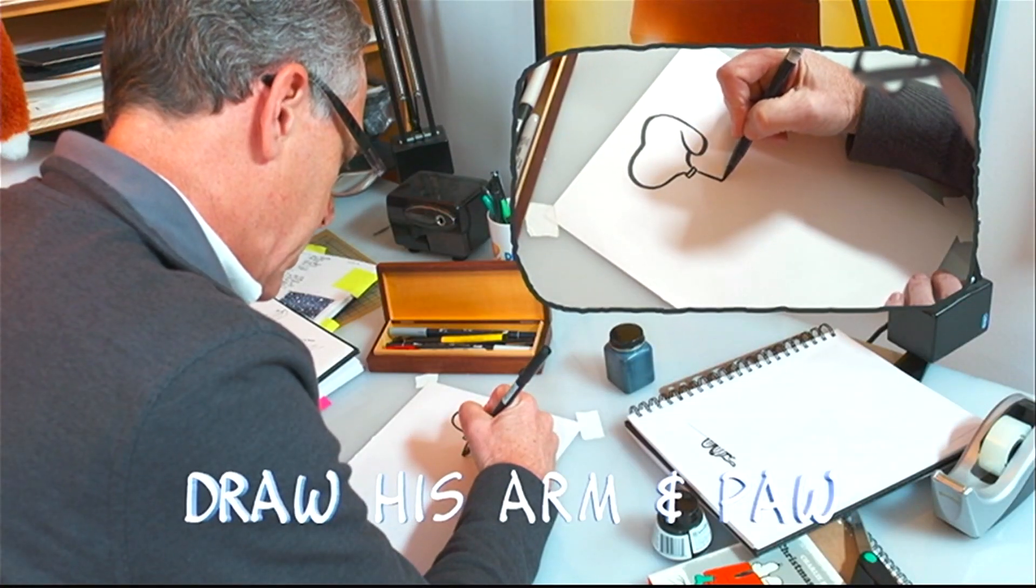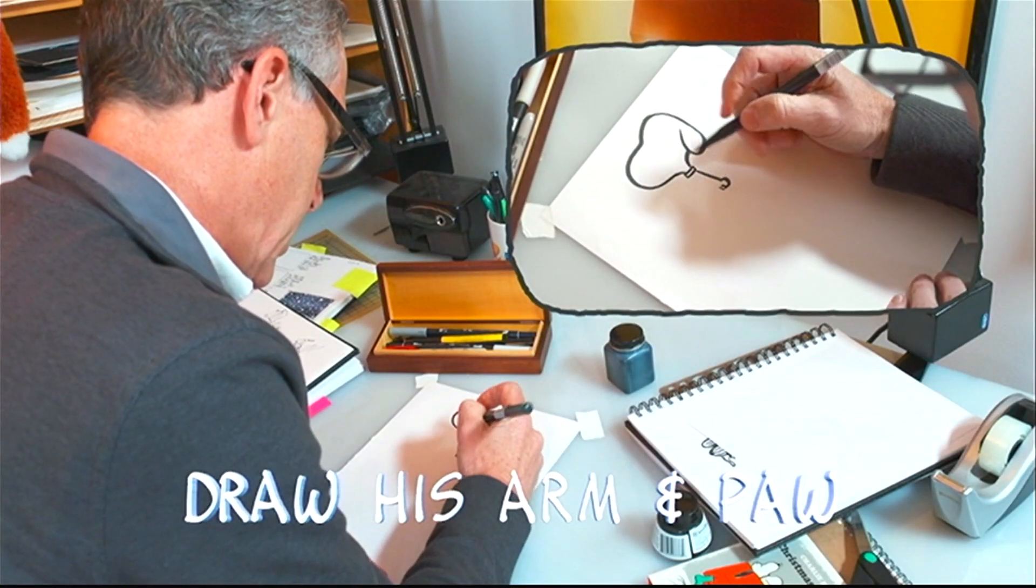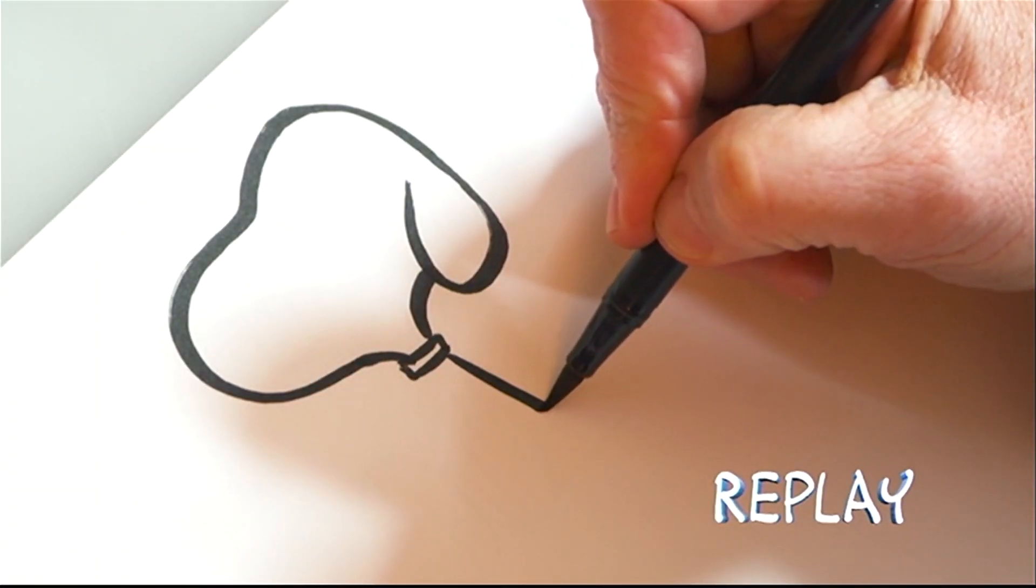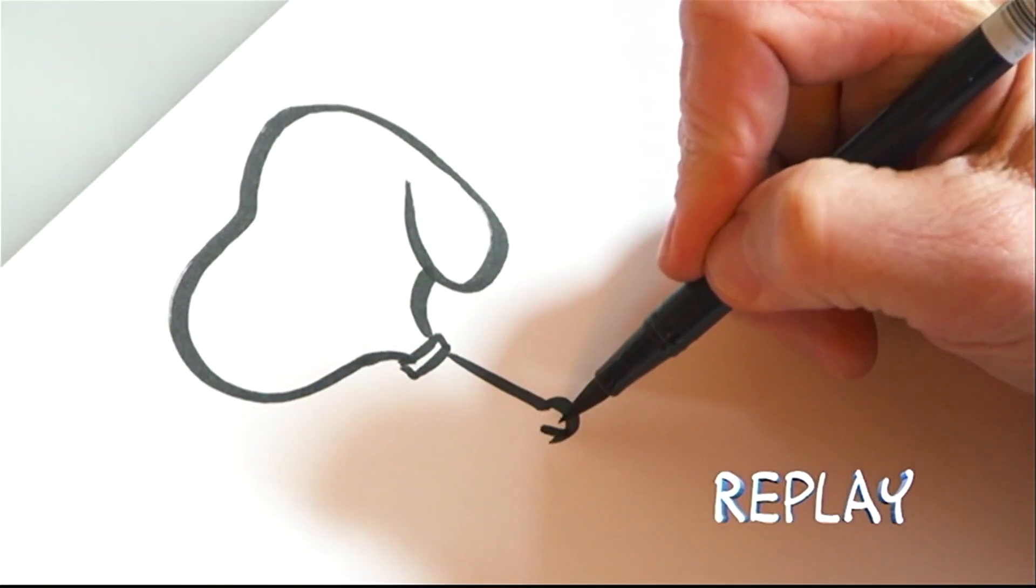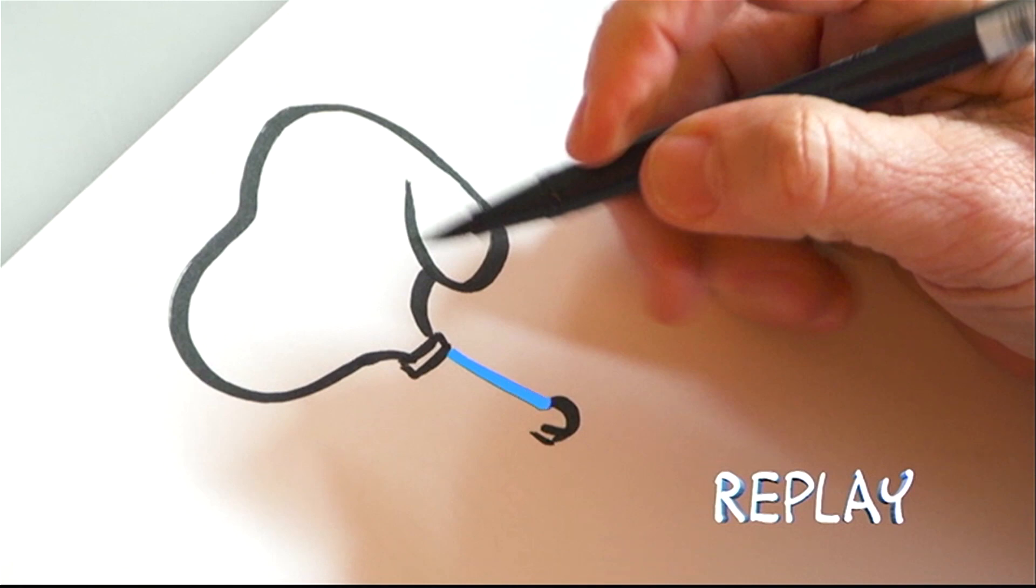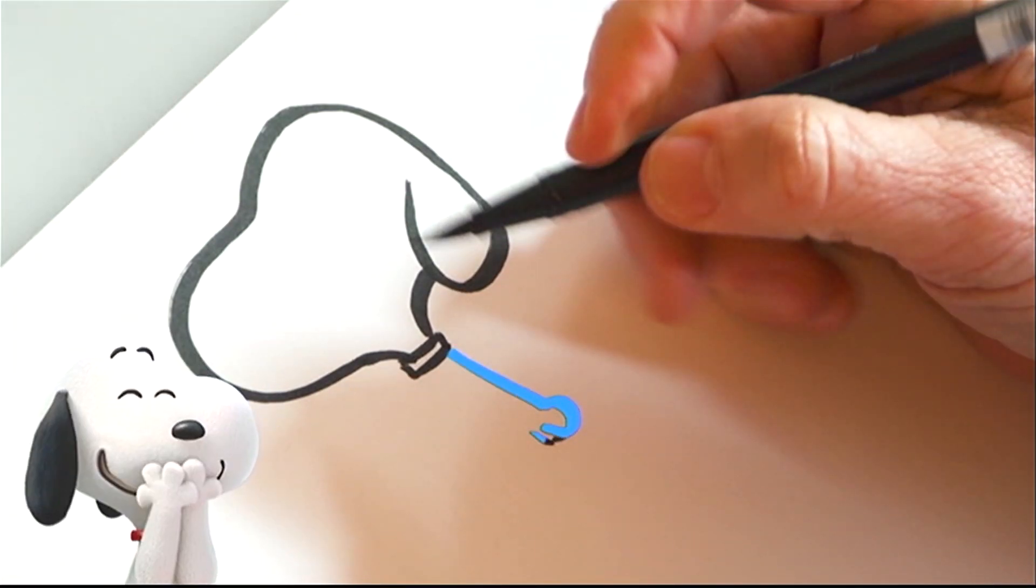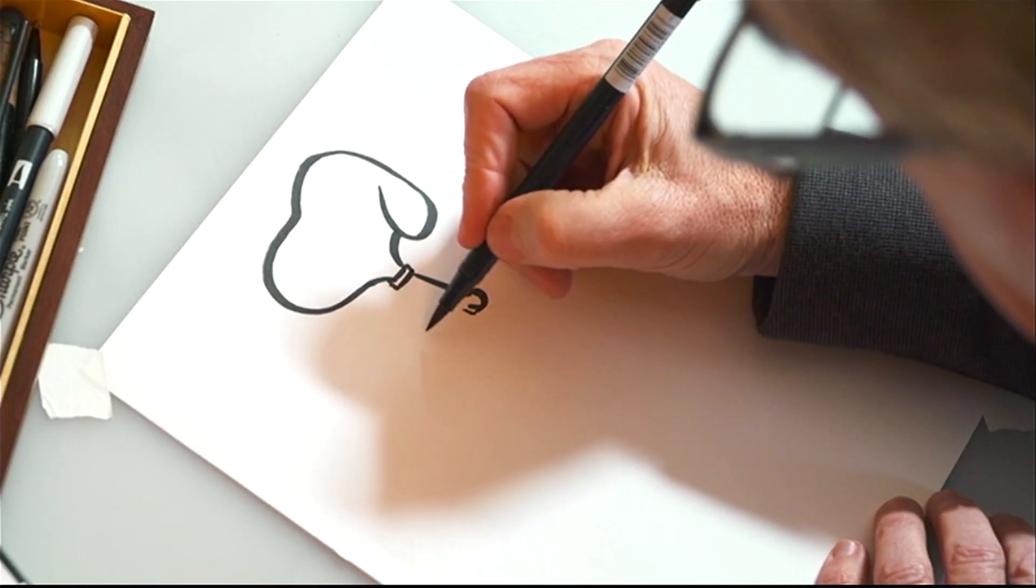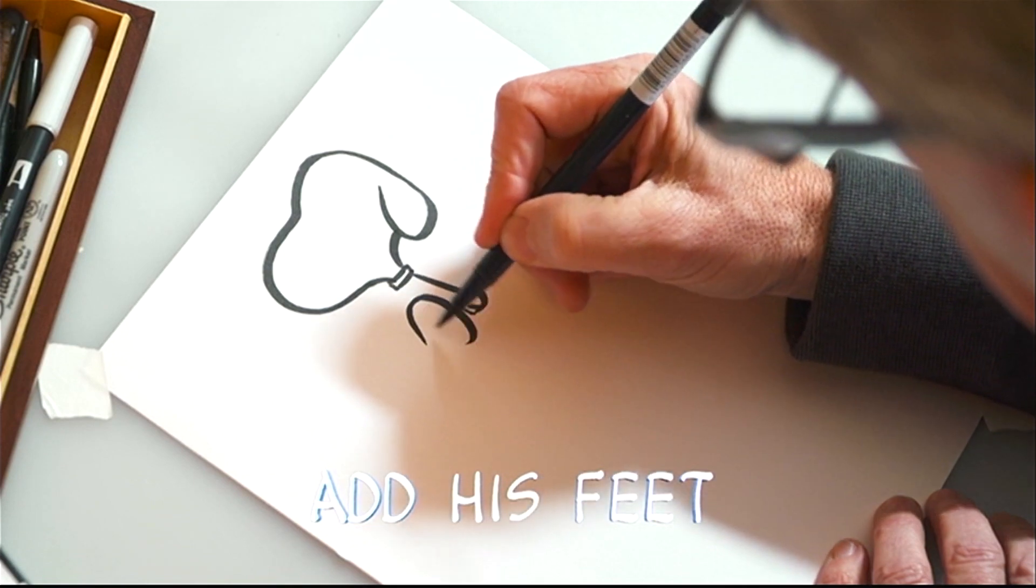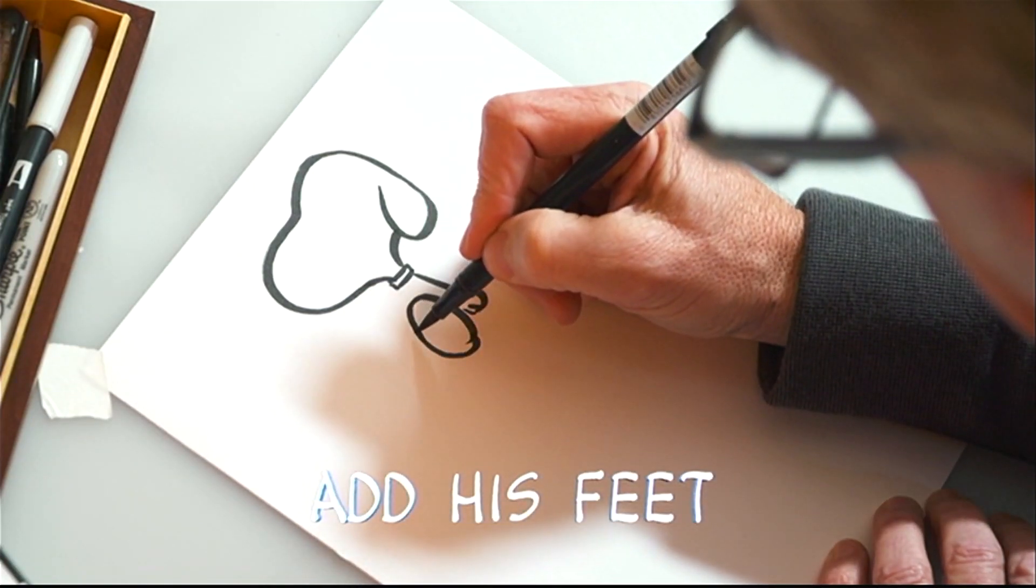From there, let's draw his arm and his paw. Snoopy's arm is one line with a couple of strokes at the bottom for his paw. And when he sits down, his two feet look like two giant Easter eggs.